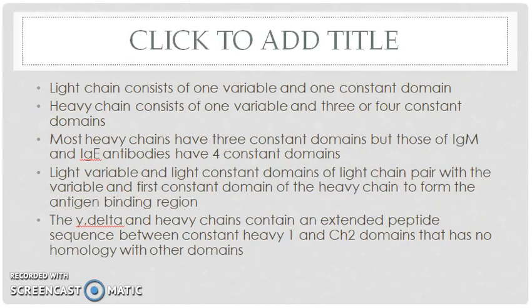The light chain consists of one variable and one constant region. The heavy chain consists of one variable and three or four constant domains. Most heavy chains have three constant domains, but those of IgM and IgE antibodies have four constant domains.